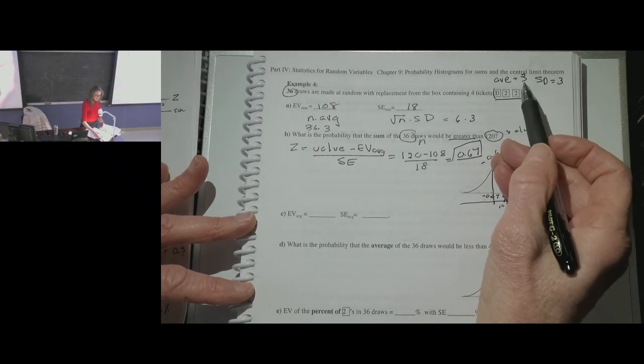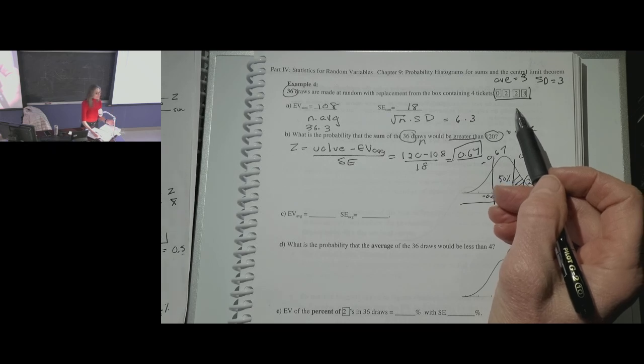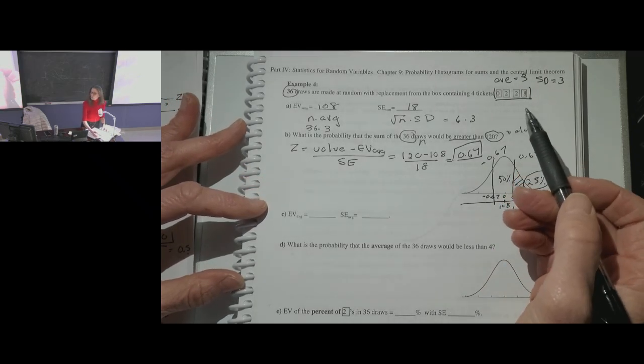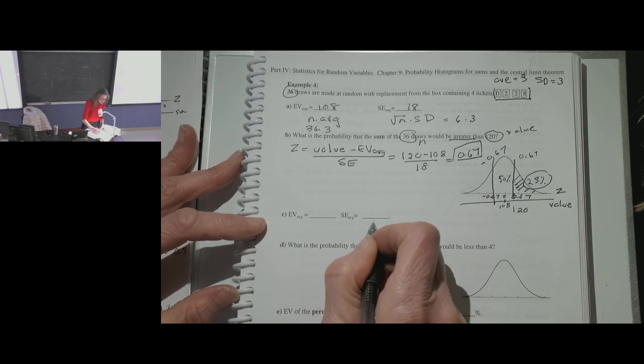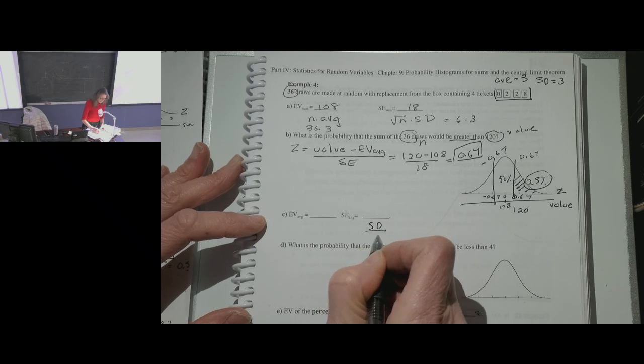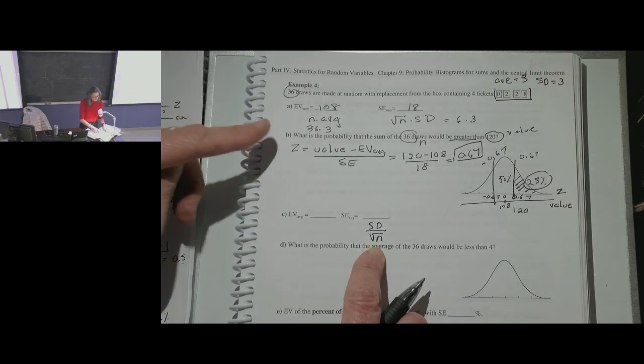The second rule is the square root rule, which says that the standard error for your sample average will vary. You'd expect to get the average of the box, which is 3, but it's going to vary. How much it varies is called the sampling error, or standard error, because each time you take a sample it changes. For sums, the standard error is the square root of n times the standard deviation of the box. For averages, the standard error is the standard deviation of the box divided by the square root of n. Our sample average doesn't bounce around as much as our sum does.